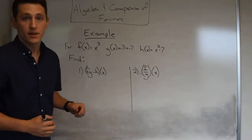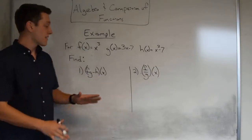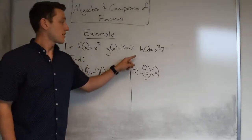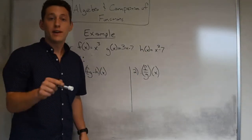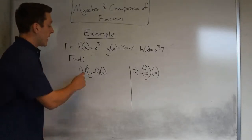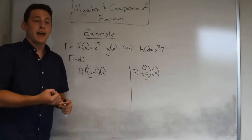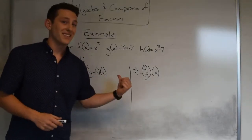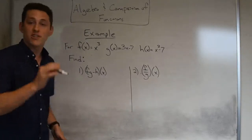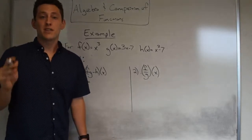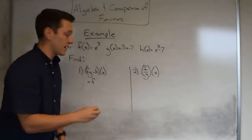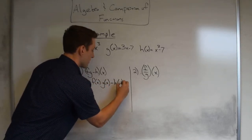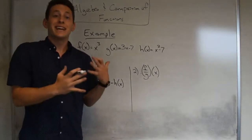Let's work through some examples. Given f(x) = x cubed, g(x) = 3x minus 7, and h(x) = x squared minus 7, find (f · g − h)(x). Just like with numbers, we can combine more than two functions. Breaking it down piece by piece: (f · g − h)(x) = f(x) · g(x) − h(x).